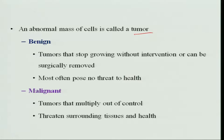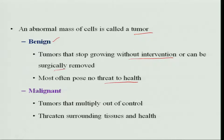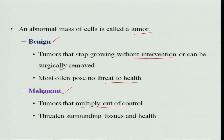This abnormal mass of cells that grows in the body is called a tumor, which can be benign or malignant. A benign tumor stops growing without intervention, can be surgically removed without any problem to the body, and most often poses no threat to health. Malignant tumors, however, multiply out of control and start threatening the surrounding tissues and health.